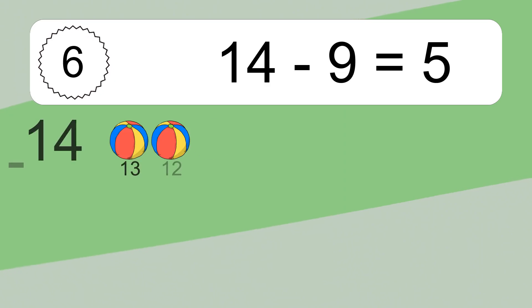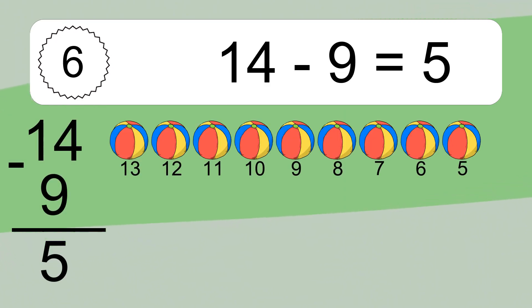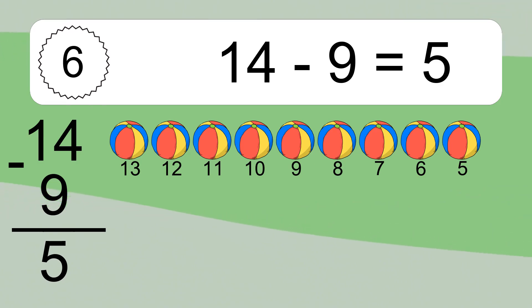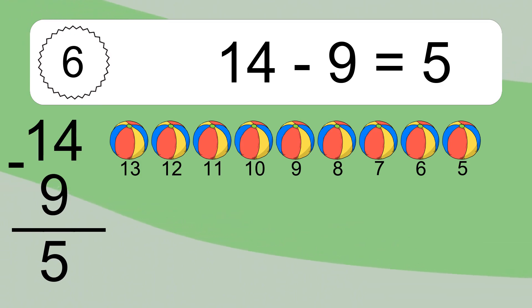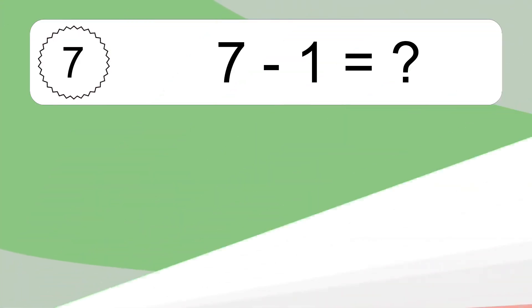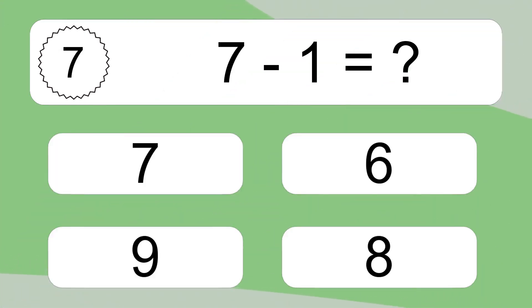14 minus 9 equals what? 14 minus 9 equals 5. Let's count it: 13, 12, 11, 10, 9, 8, 7, 6, 5.